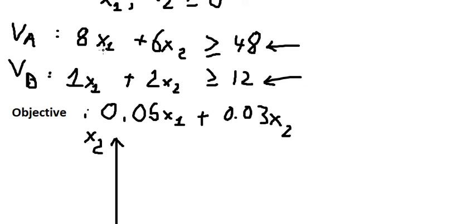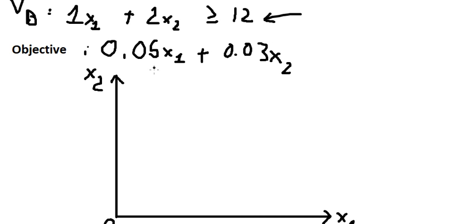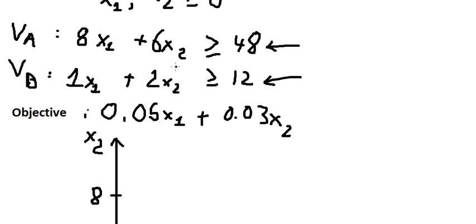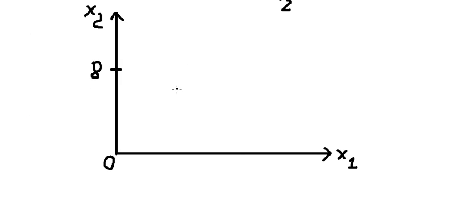When s1 equals zero, we can find s2: we put 48 divided by 6, which is 8. When s2 equals zero, we can find s1, which is 6. So we connect those two points on the graph.